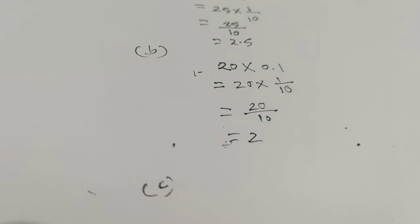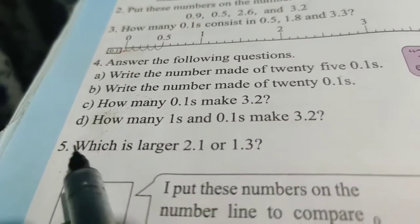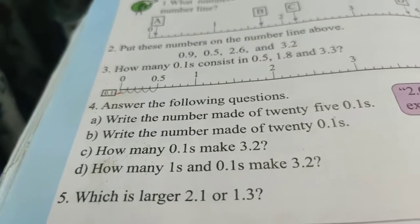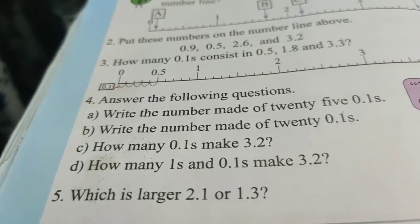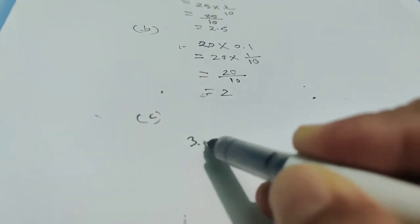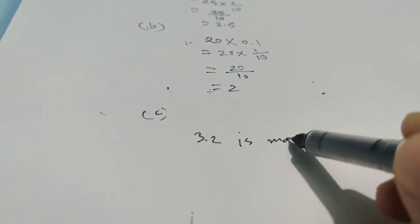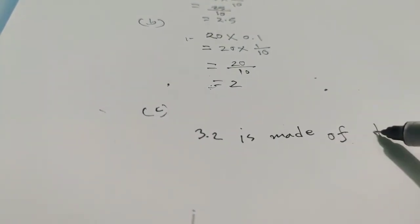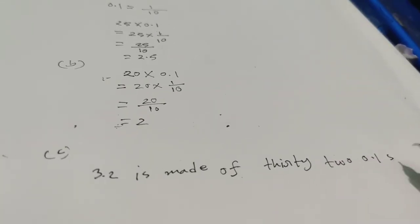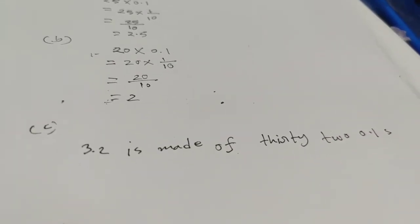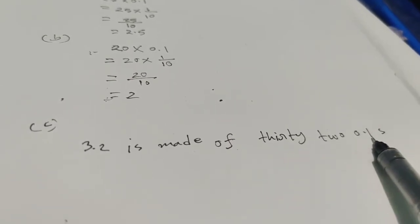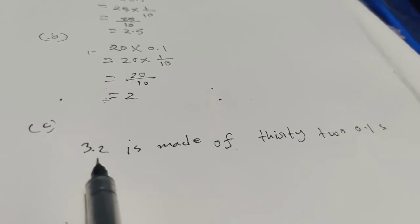Question number C: how many 0.1s make 3.2? So, 3.2 is made of how many 0.1s? We can see that 32 × 0.1 equals 3.2. So the answer is 32.